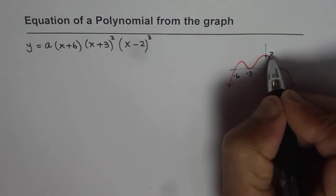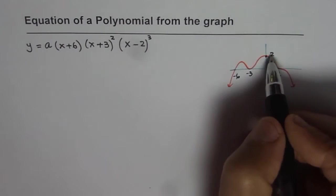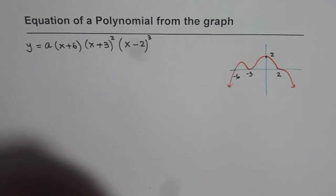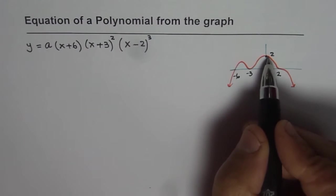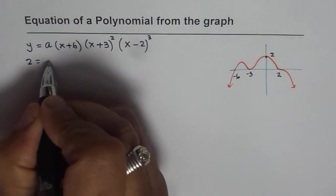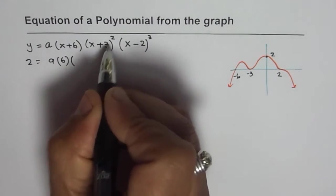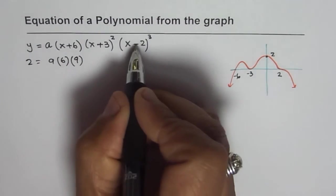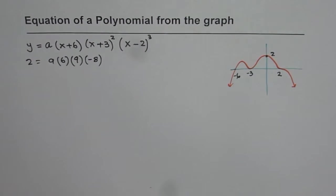We'll, okay let's take 2 for us. Okay doesn't matter. Any value could select. Now that helps us to find the value of a. So here at 0 the value on the function is 2. So y is 2 when x is 0. So we get a times 0 means just 6. 0 means 3 square which will give you 9 minus 2 square will give you minus 8.